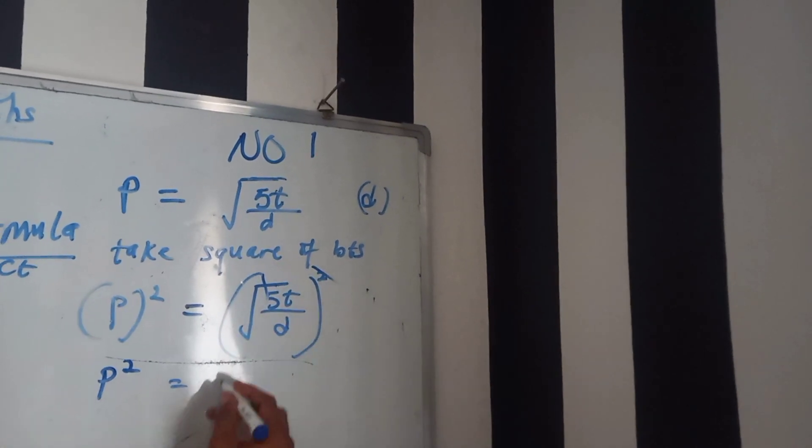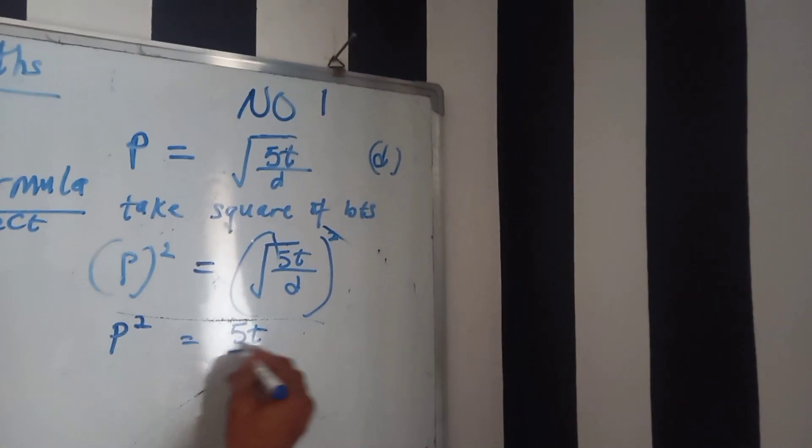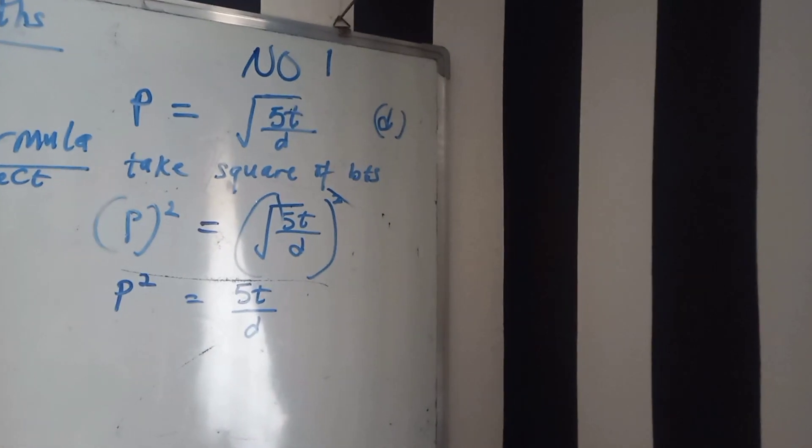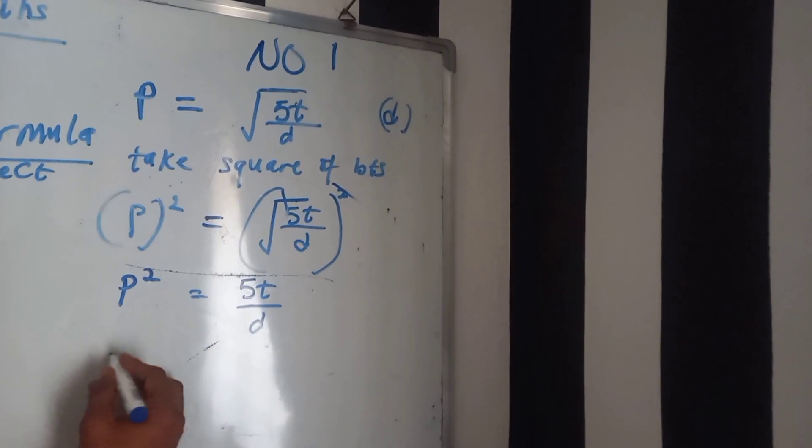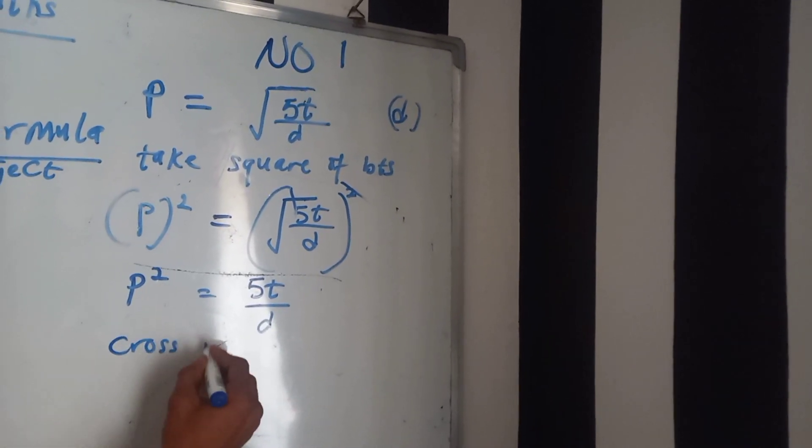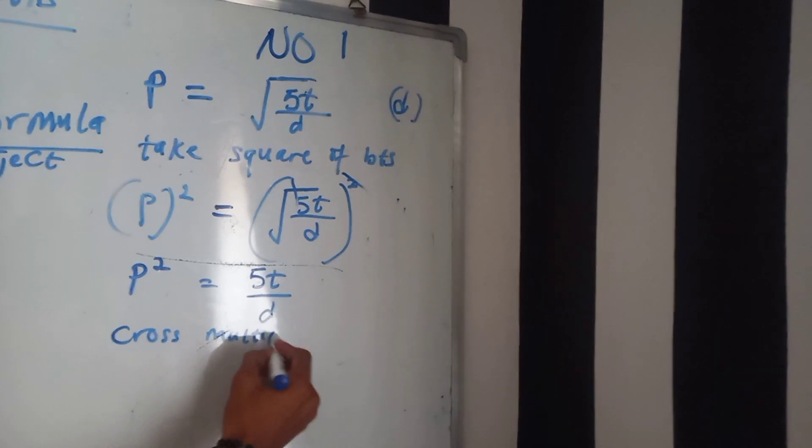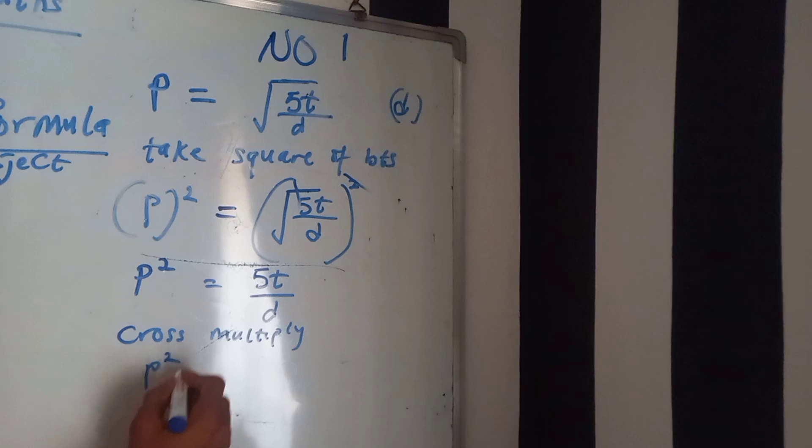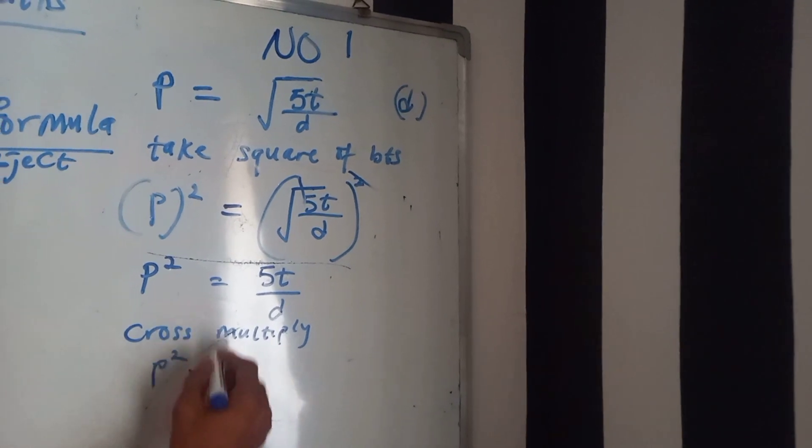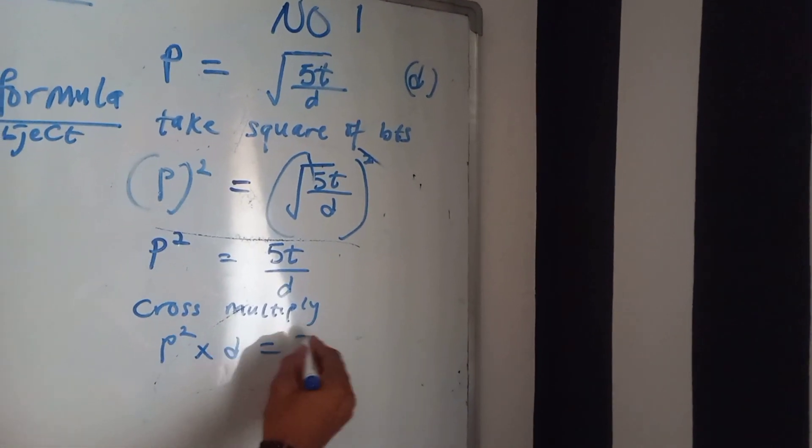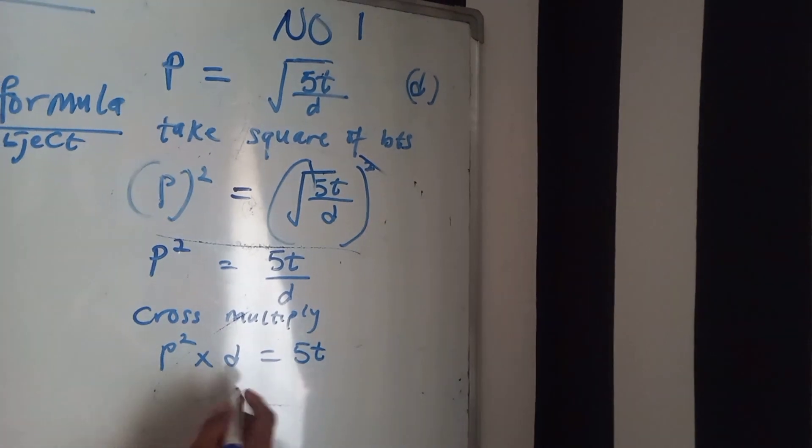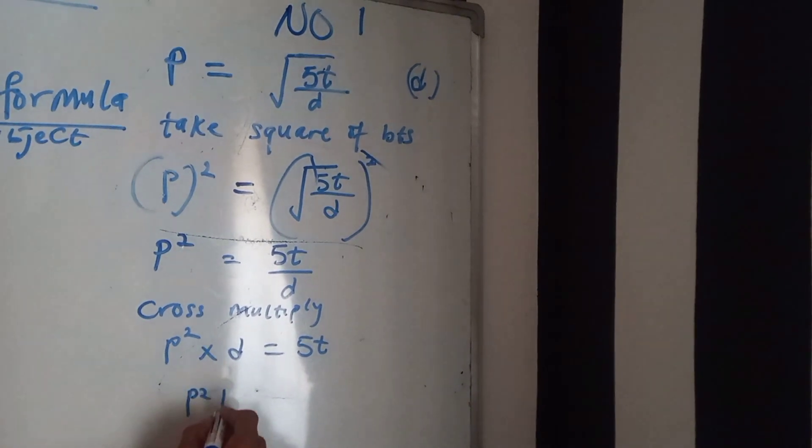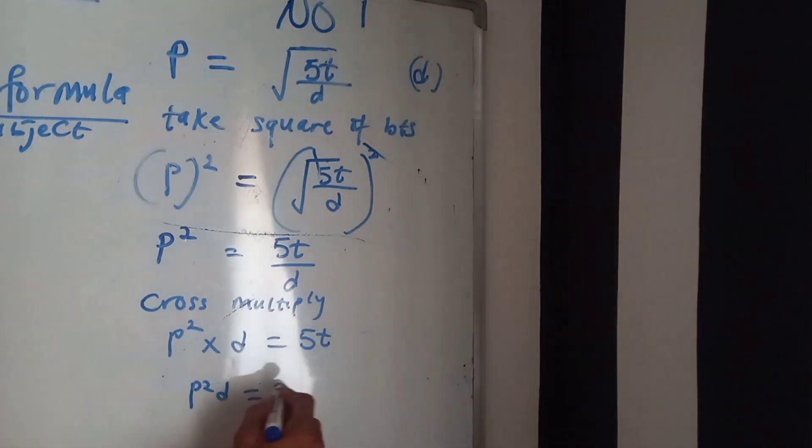I will take it step by step so you're going to get it clearly. P square multiply d equals 5c, which means P square d equals 5c.